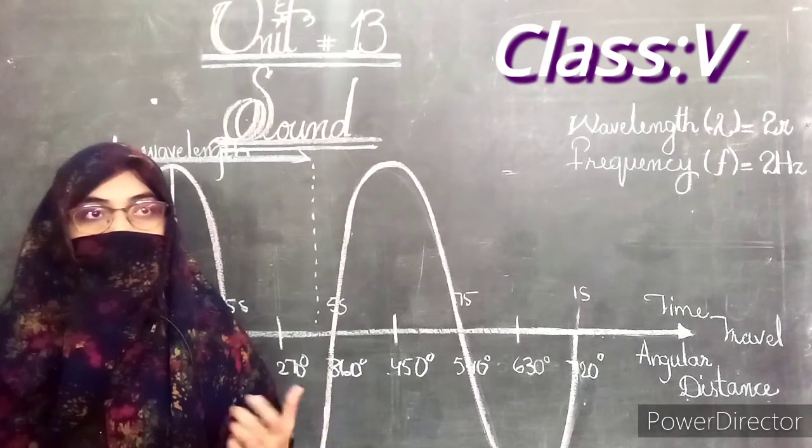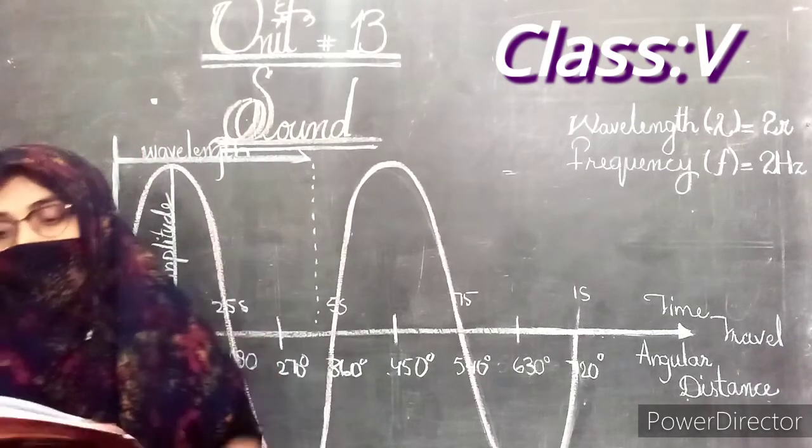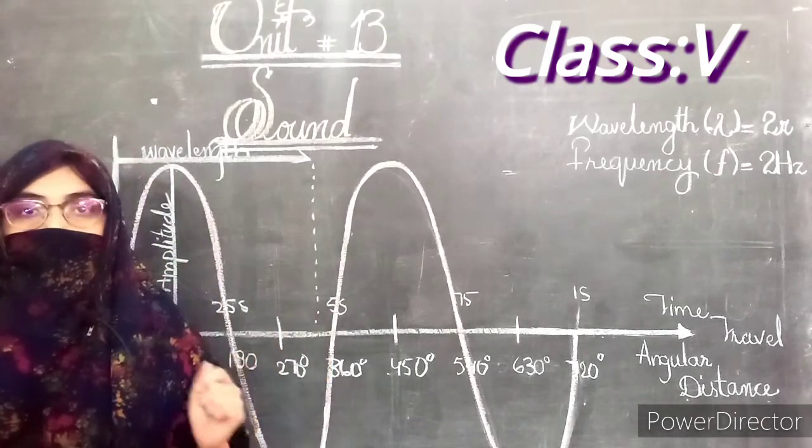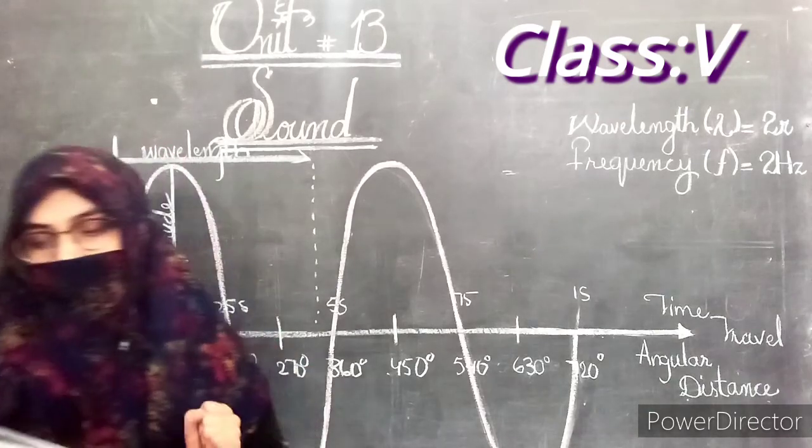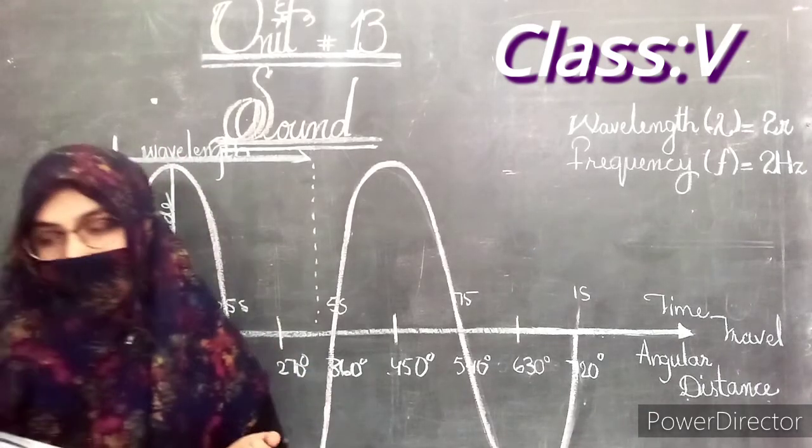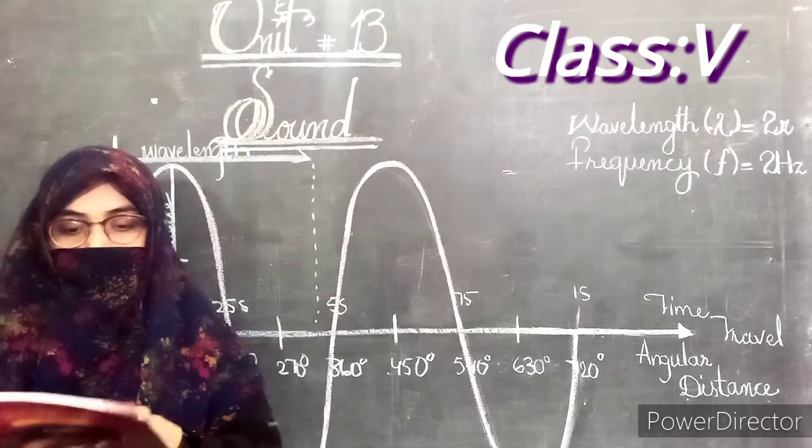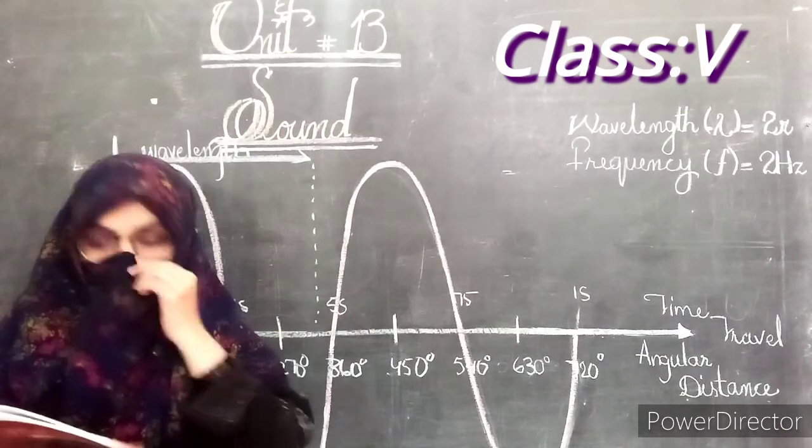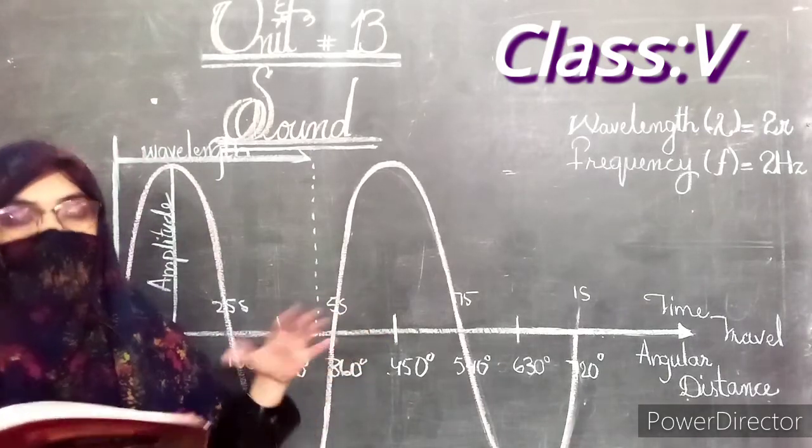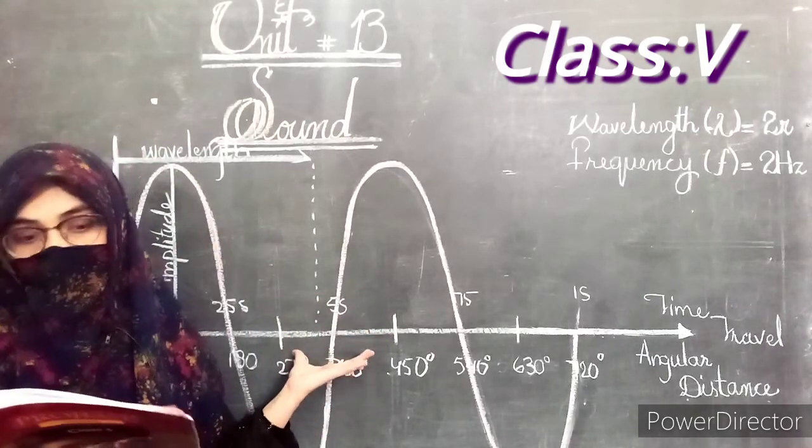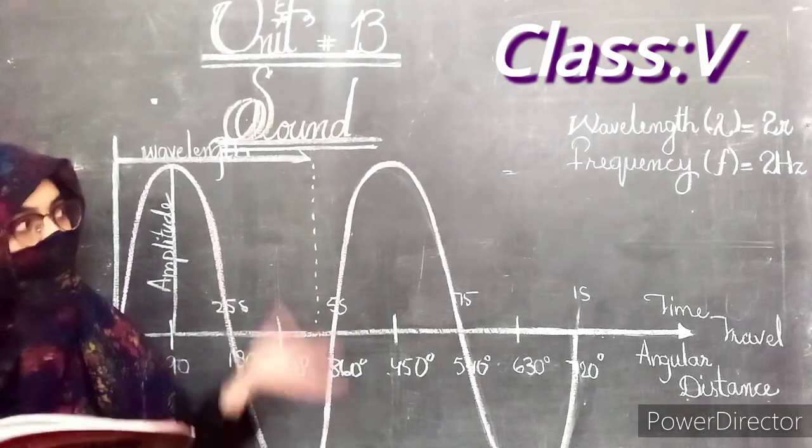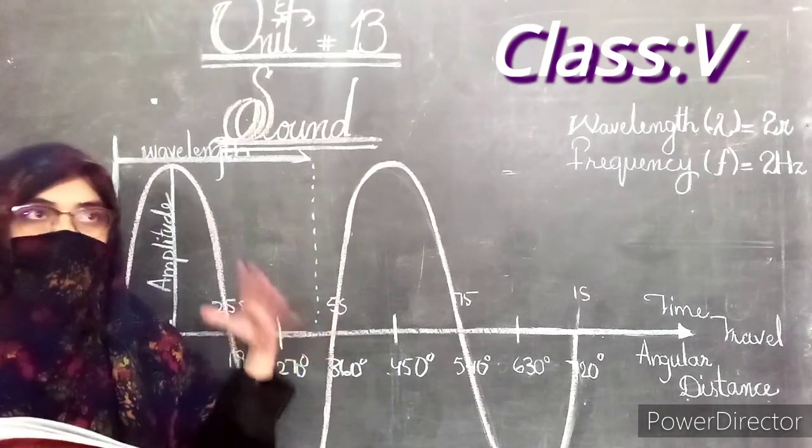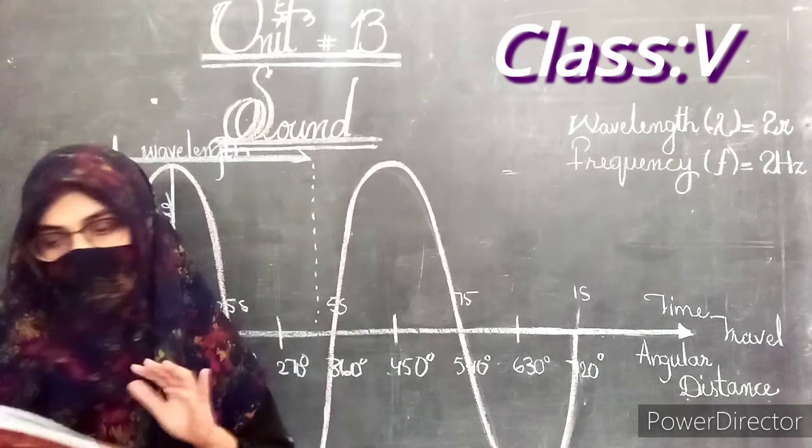For example, if we take a guitar with a long string, it will produce sounds with a lower frequency. This is because the wavelength will be longer, so the frequency will be lower, and a low pitch sound will be produced.